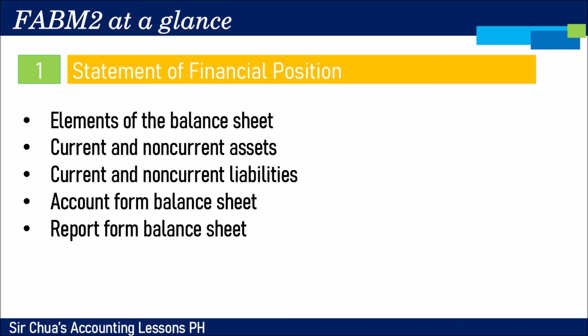The statement of financial position, or the balance sheet — we will be talking about its elements: assets, liabilities, and capital. Those terminologies were already discussed in FABM1, but we will revisit them and deepen our knowledge about current and non-current assets and current and non-current liabilities. We will properly prepare an industry-standard balance sheet in both account form and report form.